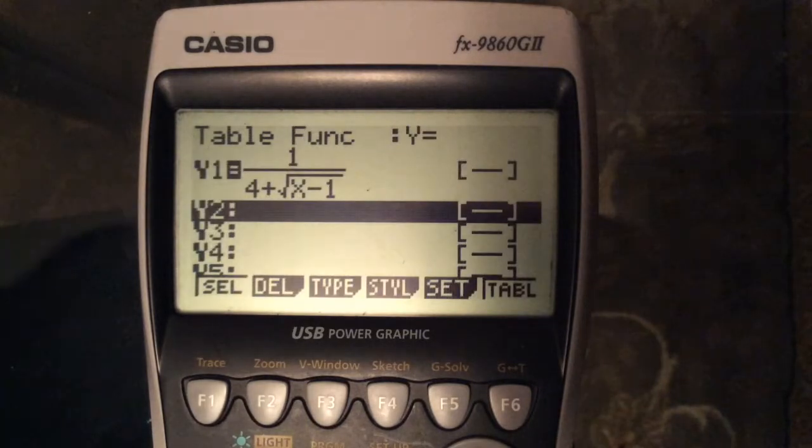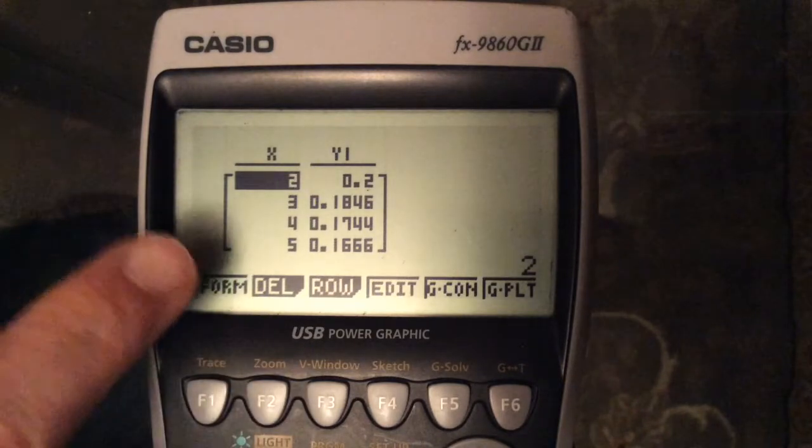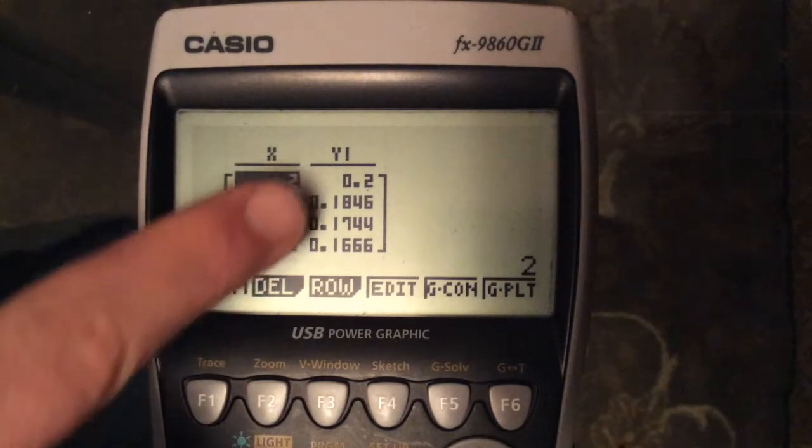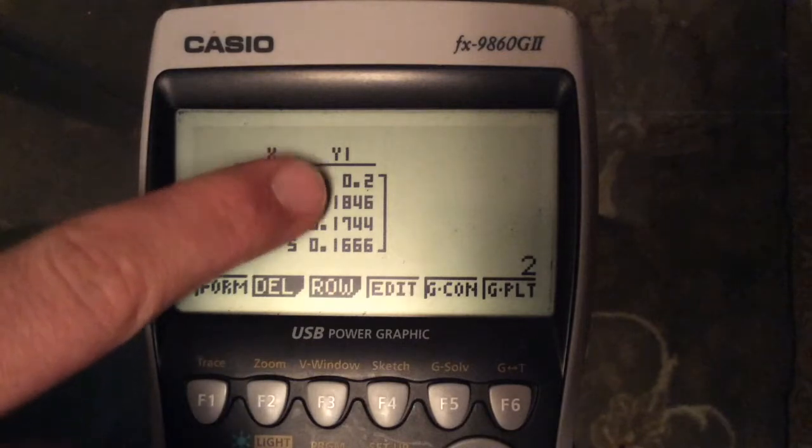Pressing execute again and we get out of there, and pressing execute and it will now calculate our values. Running down the left-hand column we've got our x values, the right-hand column gives the y values.